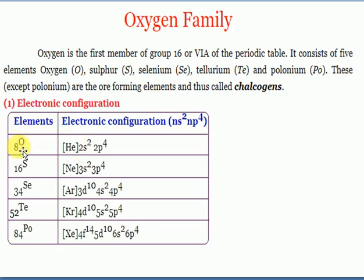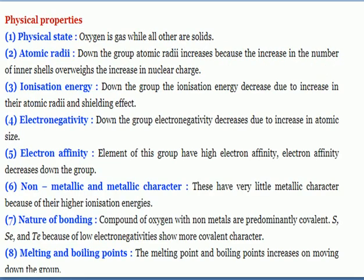Going down the group, metallic nature increases because the tendency of losing electrons increases. Elements that readily lose electrons are metals. Ionization energy decreases down the group due to increasing atomic radius and shielding effect (screening effect). These factors make it easier to remove electrons from elements lower in the group.